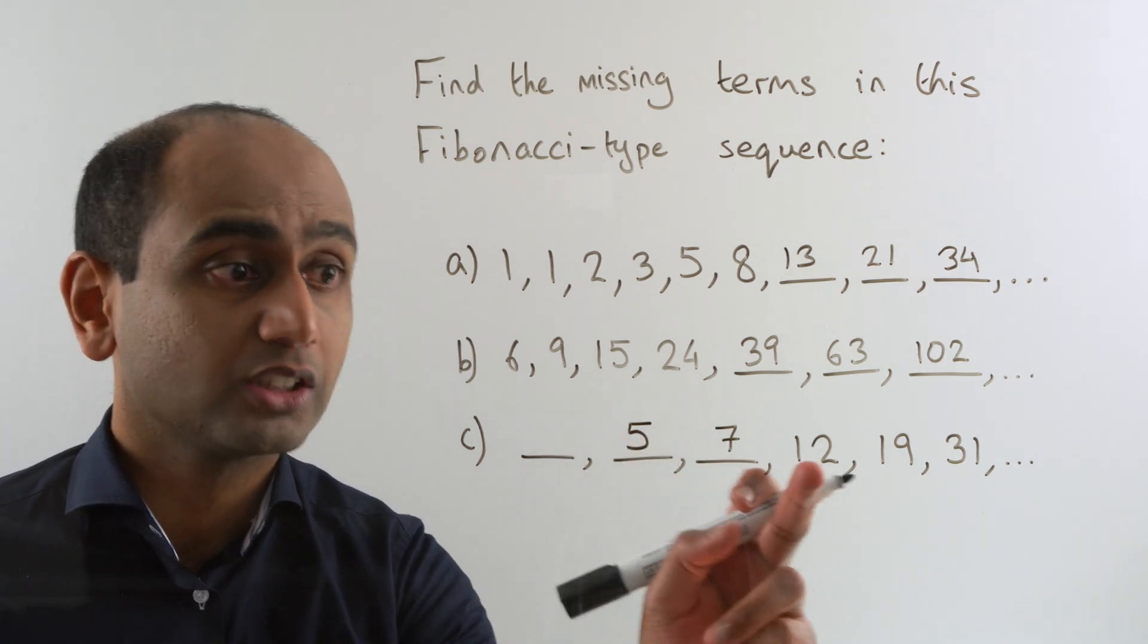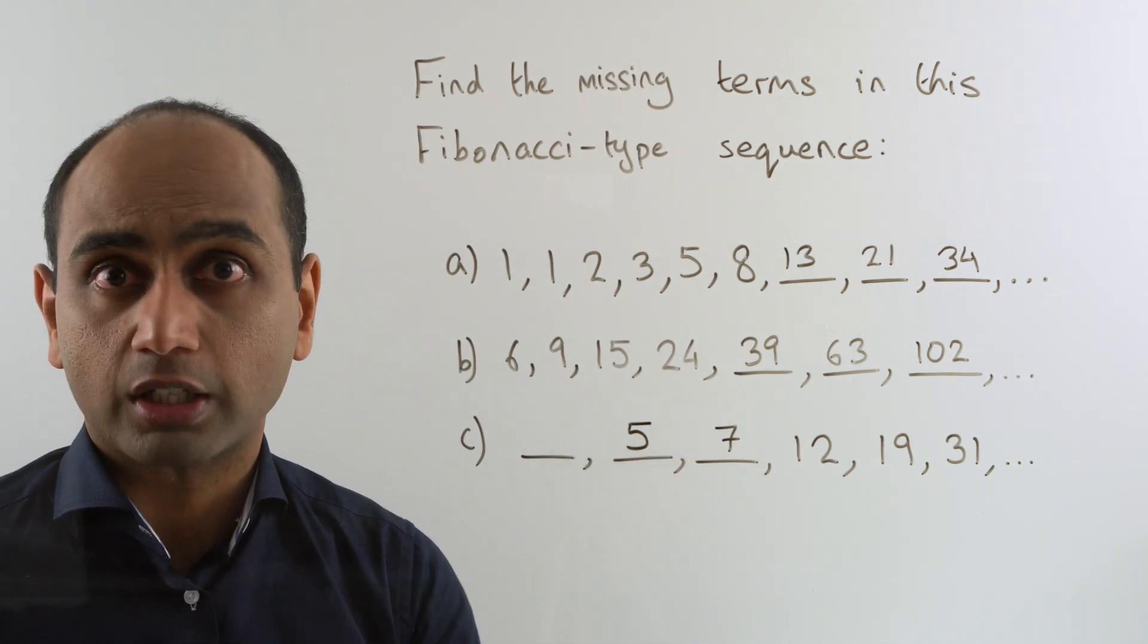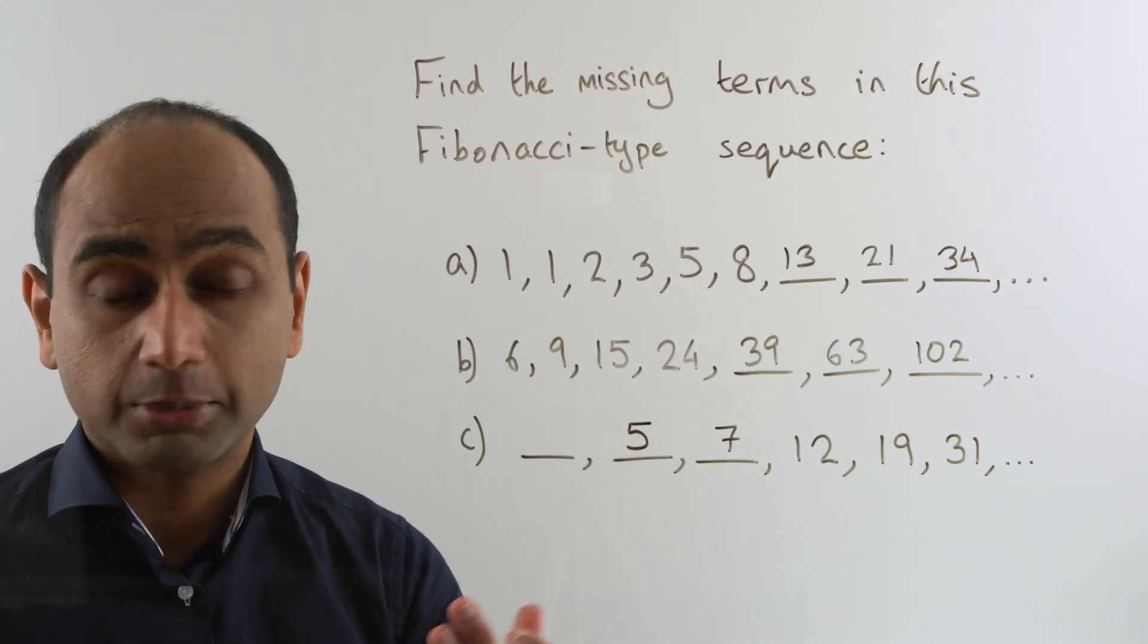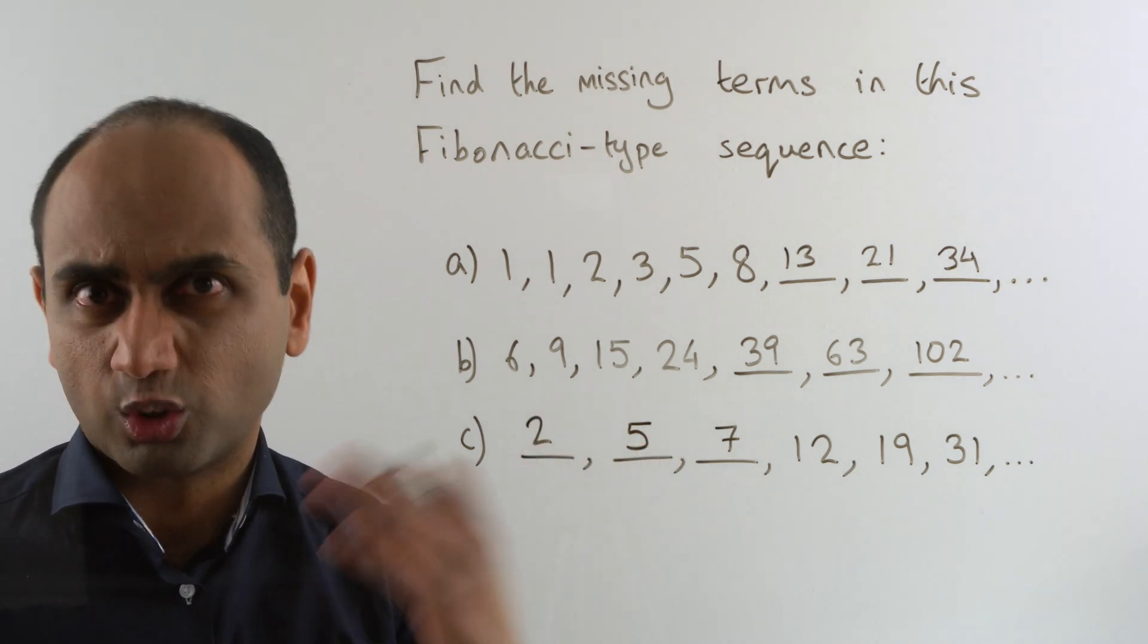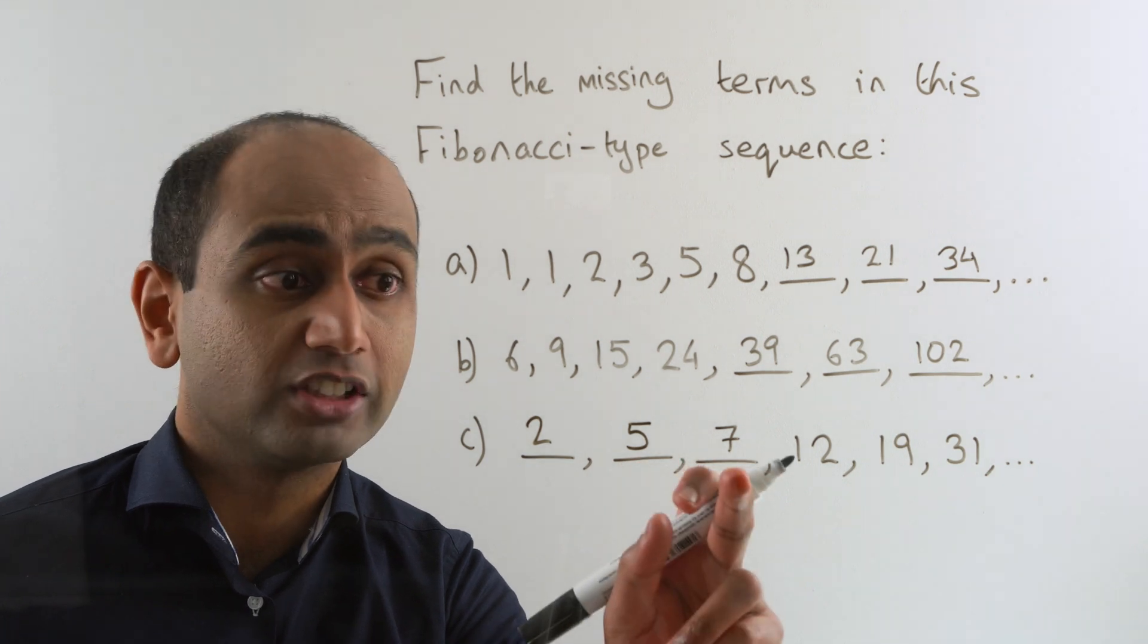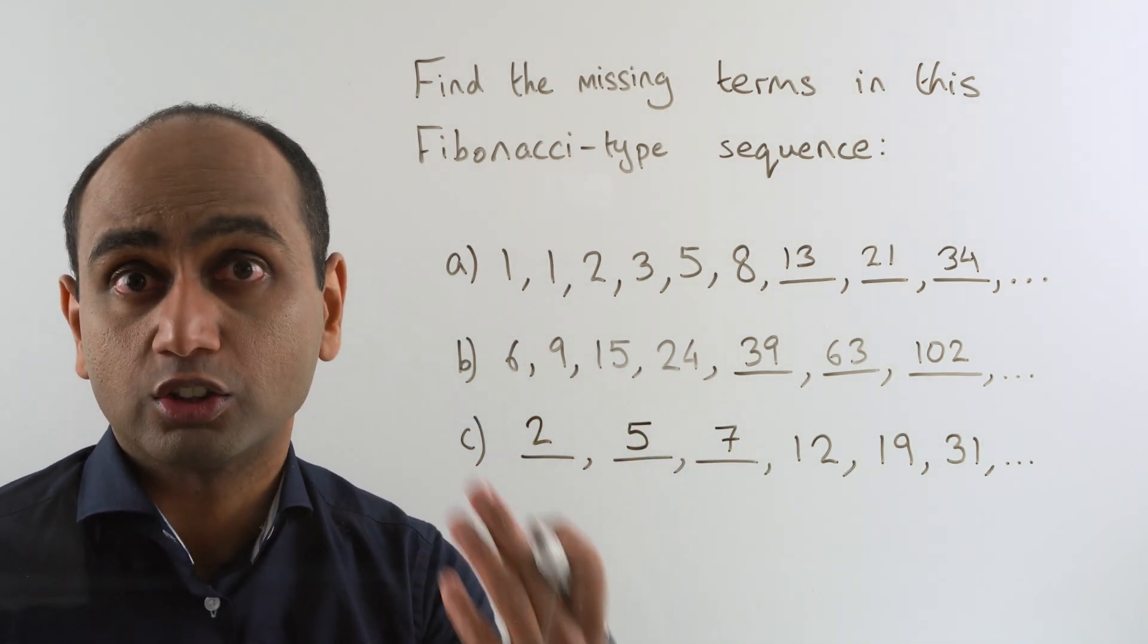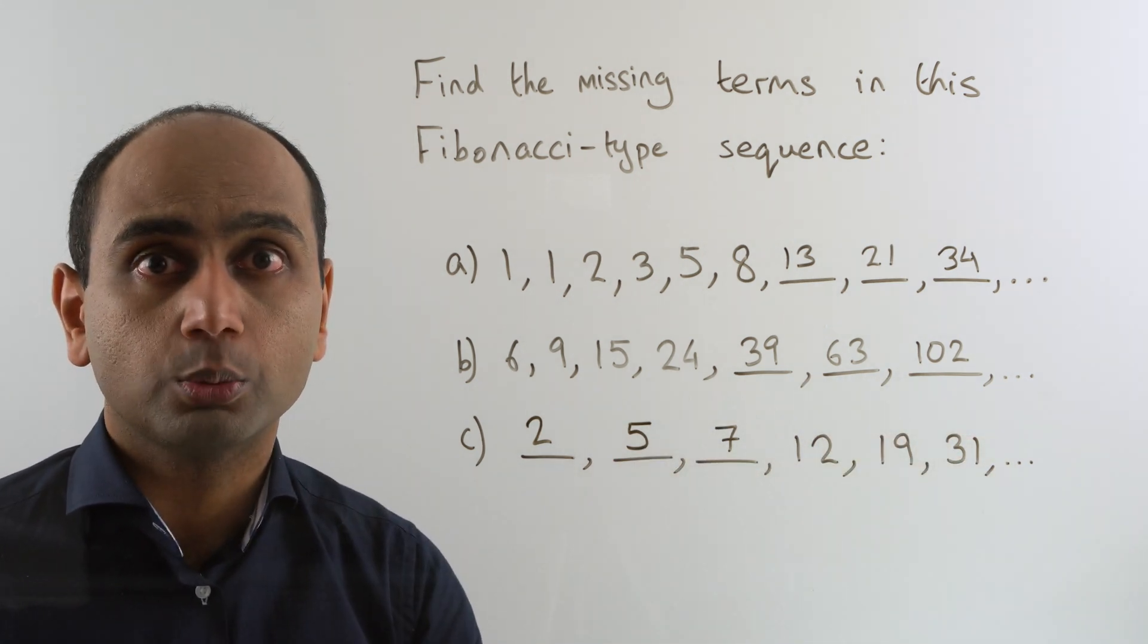Again we could have worked that out by doing 12 minus 7 and that gives us 5. Similarly we can do 7 minus 5 to give us 2, or another way of looking at that would have been what number plus 5 gives us 7. Well that missing number had to be 2. So here we have it, the missing three numbers in this Fibonacci type sequence.